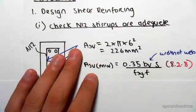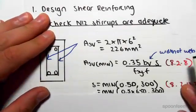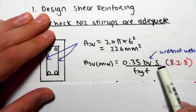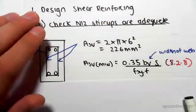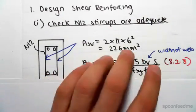Now finding these terms: bv is the width of the web, s is the spacing. Now we need to know straight up the maximum spacing we can deal with.